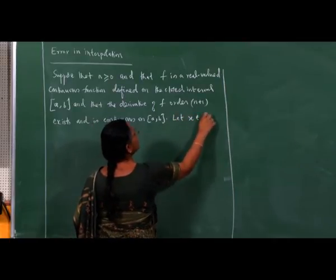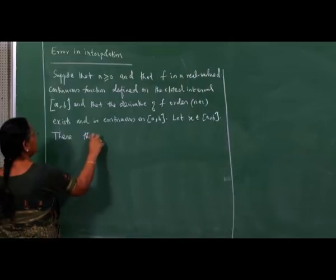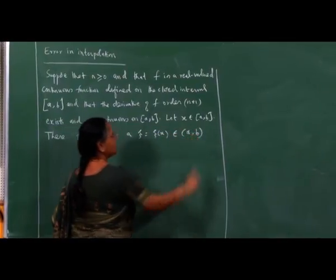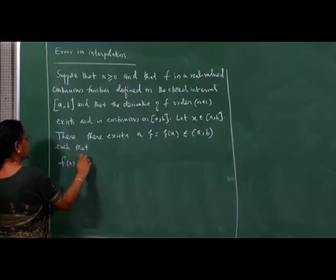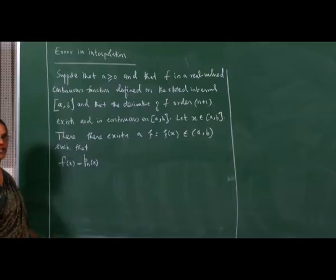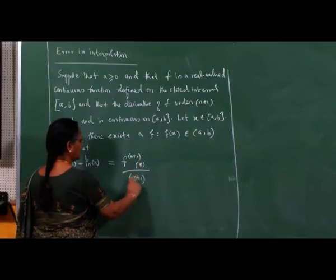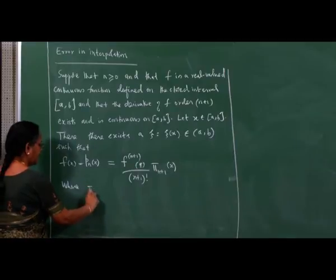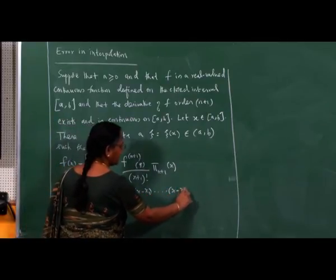Let x belong to the closed interval [a, b]. Then there exists a ψ which depends on x, belonging to the open interval (a, b), such that f(x) minus p_n(x) — the interpolating polynomial of degree at most n that interpolates f — equals the (n+1)th derivative at ψ divided by (n+1)! times π_{n+1}(x), where π_{n+1}(x) = (x - x₀)(x - x₁)···(x - x_n).